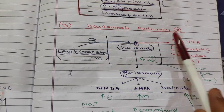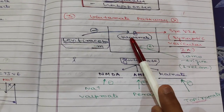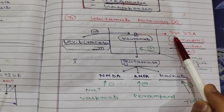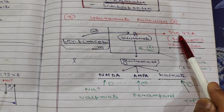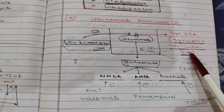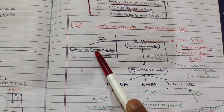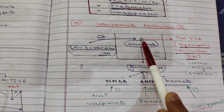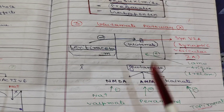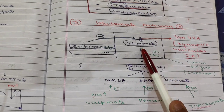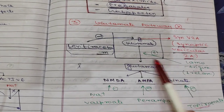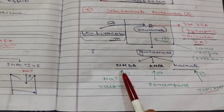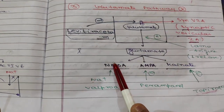The third group is glutamate pathway inhibitors. Glutamate is stored and released through a channel known as SynV2A — synaptic vesicular 2A. We can use levetiracetam to inhibit this channel. Glutamate release is also inhibited by lamotrigine.